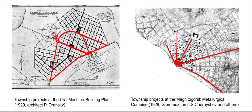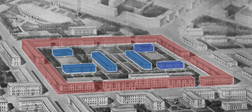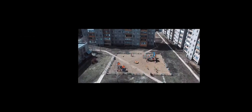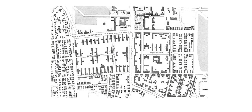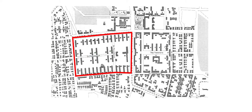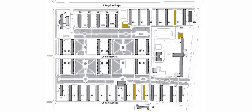Magnitogorsk's street axis is directed towards the industry, highlighting it. Norilsk's workers' village had an inner block structure, similar to that proposed by Ernst May, with schools nested within the blocks. These blocks were formed by rows of buildings, the first eight of which were constructed by Chernyshev. Other infrastructure and greenery were then distributed within the block.